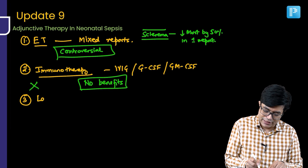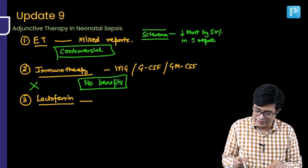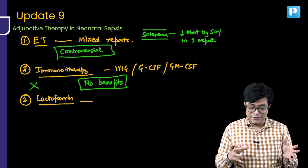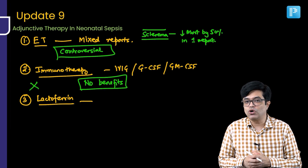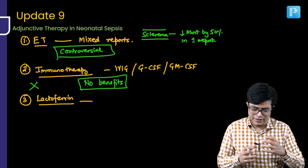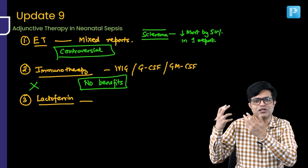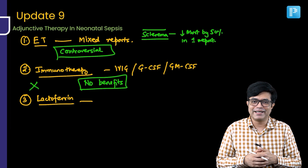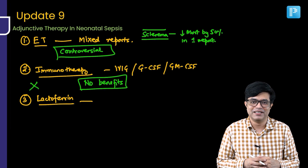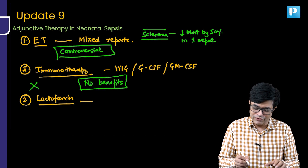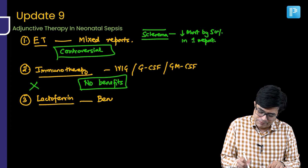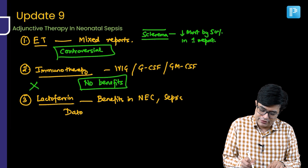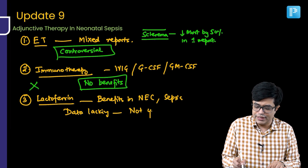Third is lactoferrin. Lactoferrin has potent anti-inflammatory properties and is present in breast milk, which is probably why breast milk protects against neonatal sepsis. Extracts of lactoferrin show some benefit, but the data is lacking. Lactoferrin has shown benefits in NEC as well as neonatal sepsis in some studies, but it has not been given a mainstream role and is not yet routinely recommended.